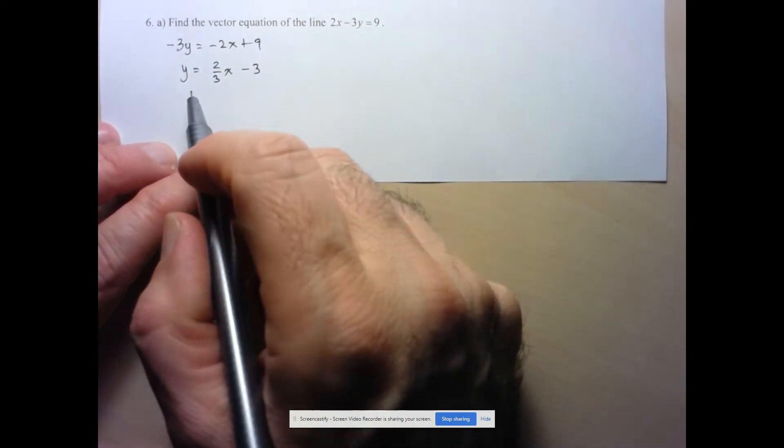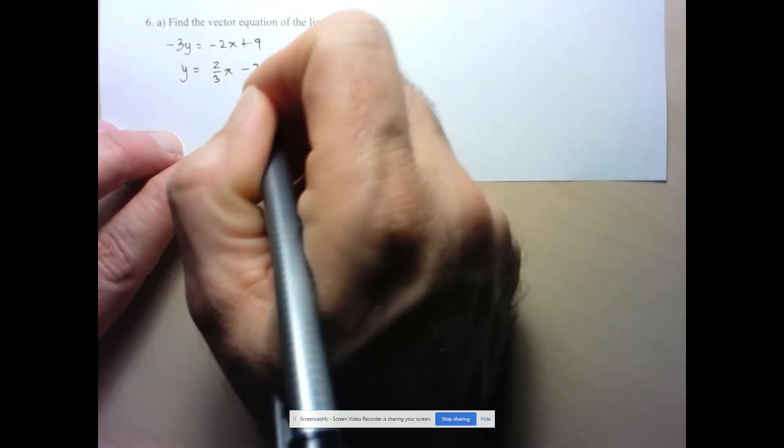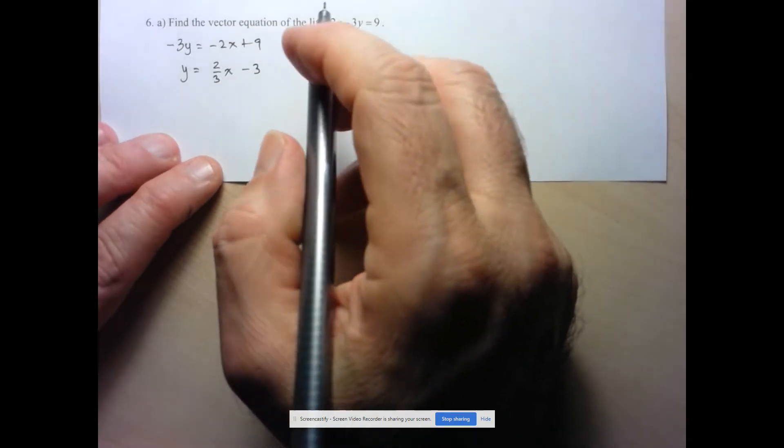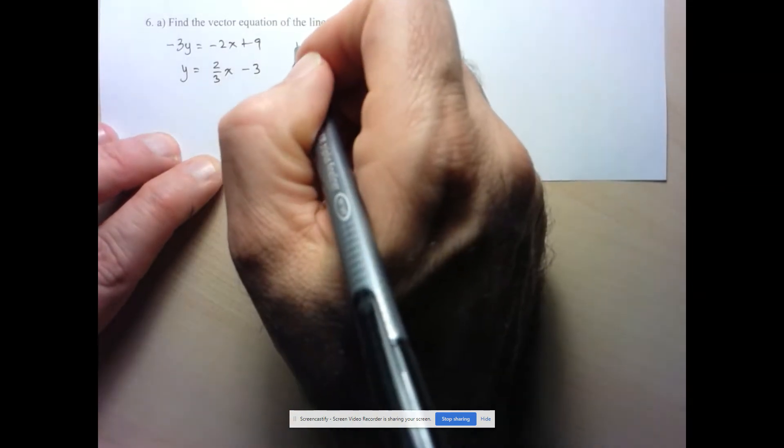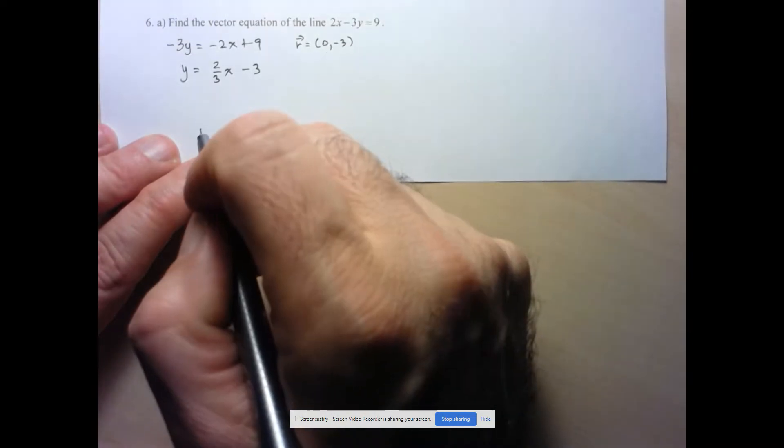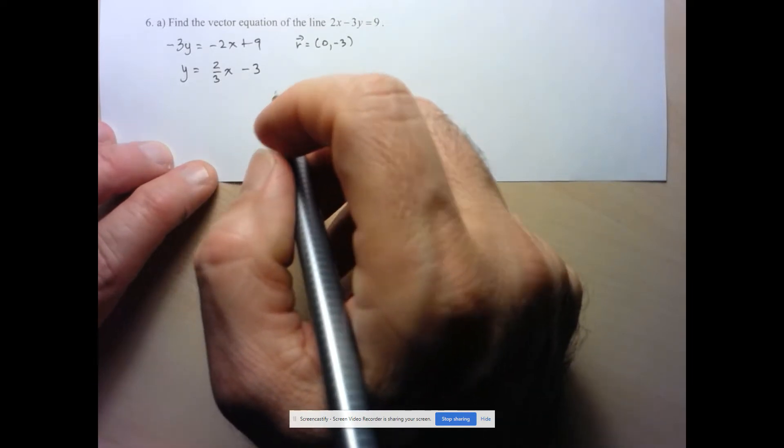And in fact, by doing this, we also have a point on this line. We know that 0, negative 3, since negative 3 is the y-intercept, is going to be on this line. So that's already taken care of. There's our r-naught, so our vector going from 0, 0 to 0, negative 3. And now let's see if we can figure out the direction vector.